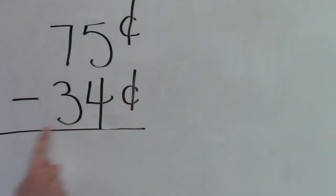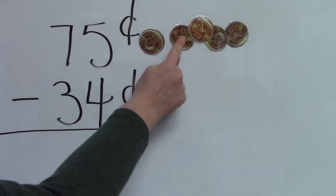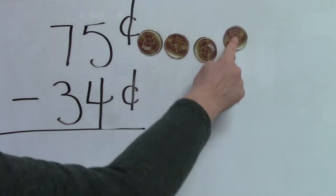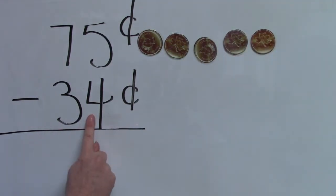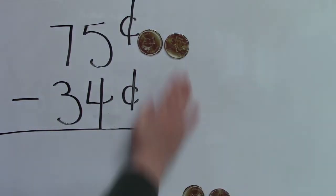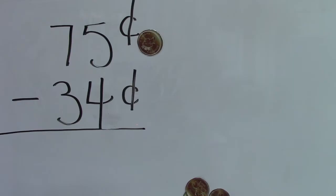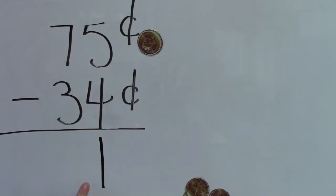In the question 75 cents take away 34 cents we can think of it as using pennies. If I have five pennies, one, two, three, four, five, and I take away four of them, one, two, three, four, I have one left and I'm going to write the one directly underneath the ones place or our pennies place.